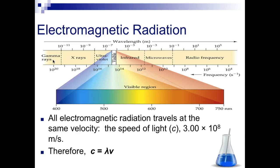So, all electromagnetic radiation travels at the same velocity, the speed of light, which is 3.00 times 10 to the 8th meters per second. So we can come up with this equation. This equation is c, which is the speed of light, is equal to the wavelength of the wave times the frequency.